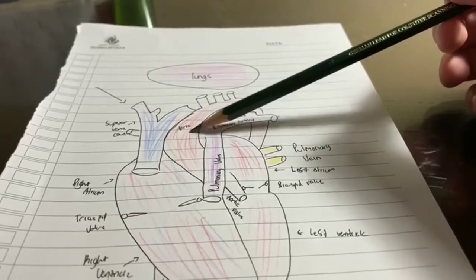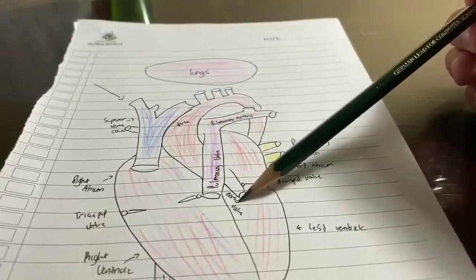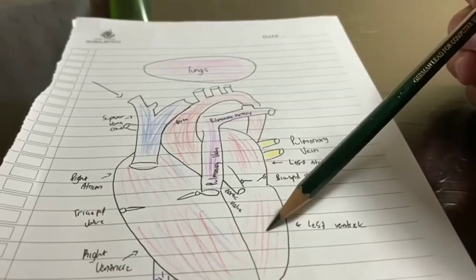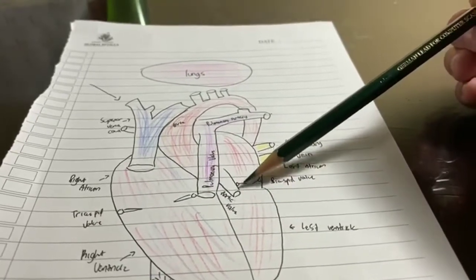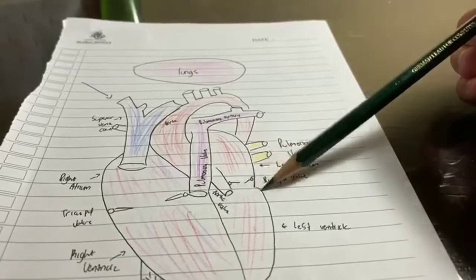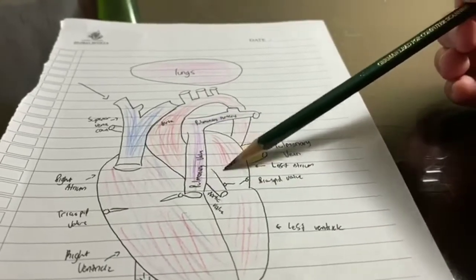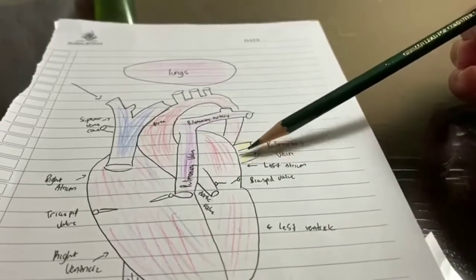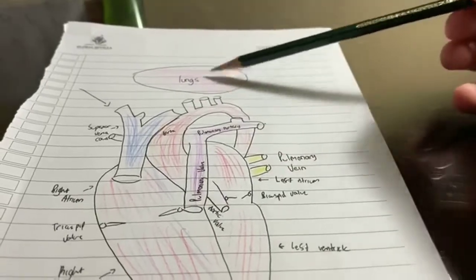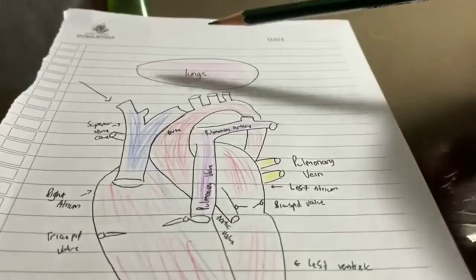Next to that is the aorta. It comes down to here. This is the aortic valve. Here, this is the left ventricle. That's the bicuspid or mitral valve. Above that is the left atrium. Next to that is the pulmonary vein. And supposedly in diagrams, that's the lungs.